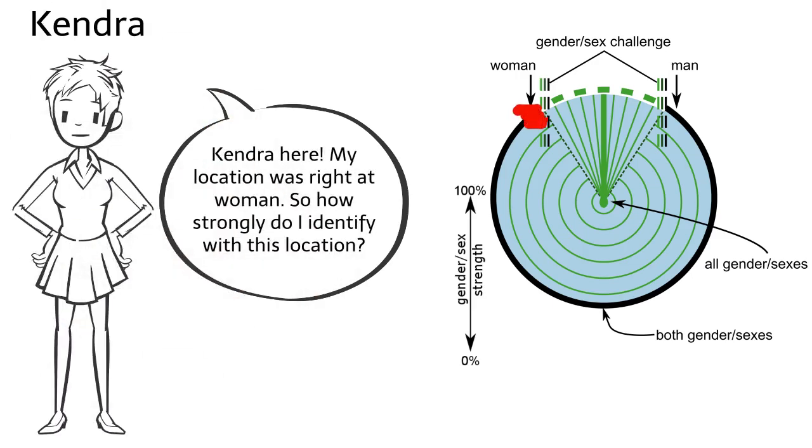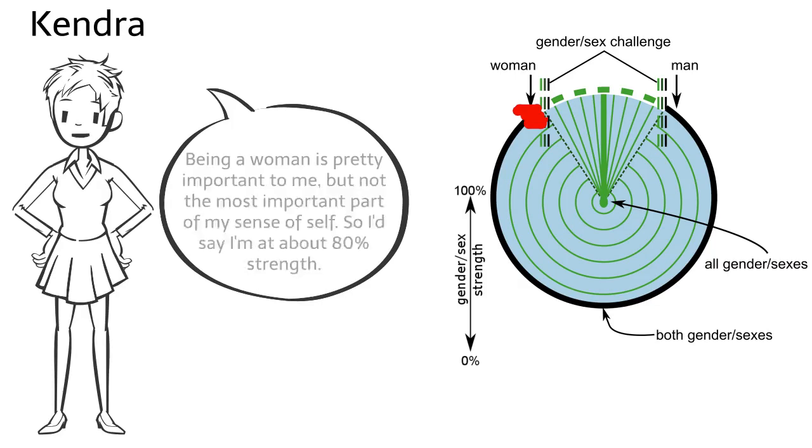Kendra here. My location was right at woman, so how strongly do I identify with this location? Being a woman is pretty important to me, but not the most important part of my sense of self. So I'd say I'm at about 80% strength.